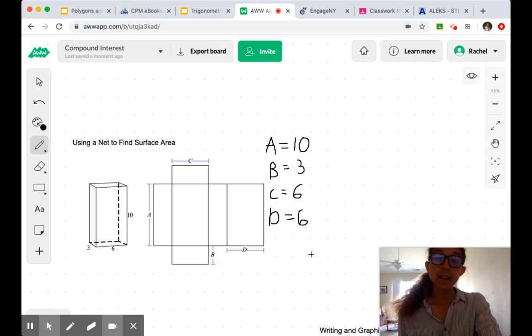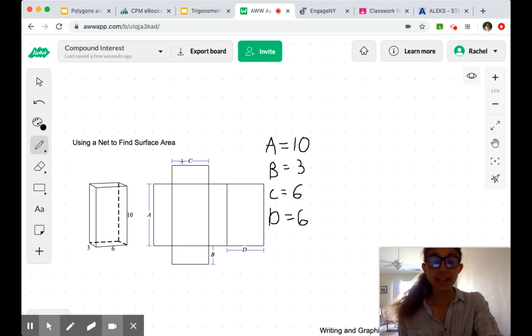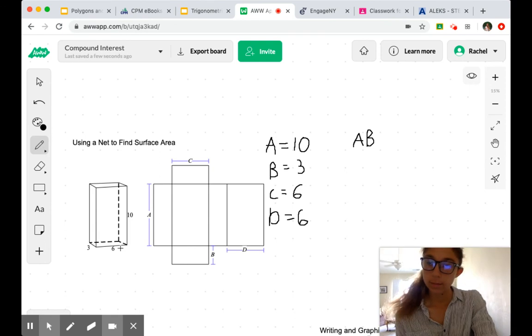Now that we've got our sides, we can take the area of each face. Remember that each side of a three-dimensional object is called a face. Our faces are A times B, and these are the longer, skinny sides.